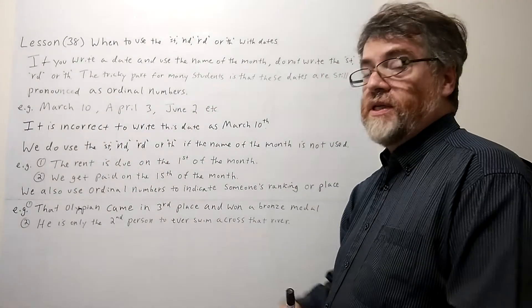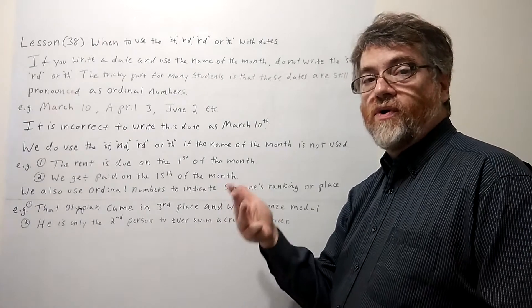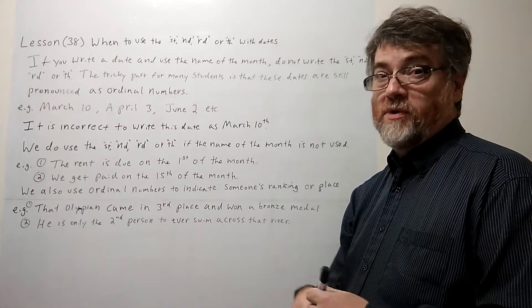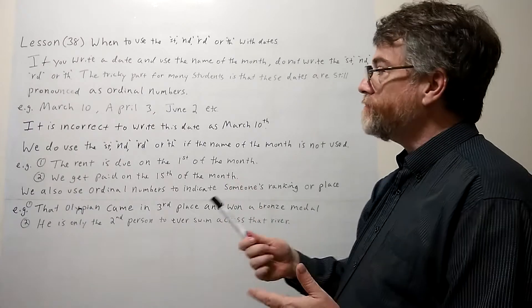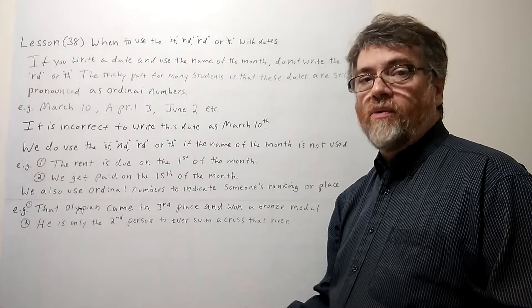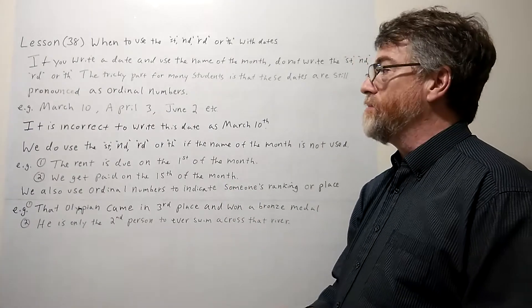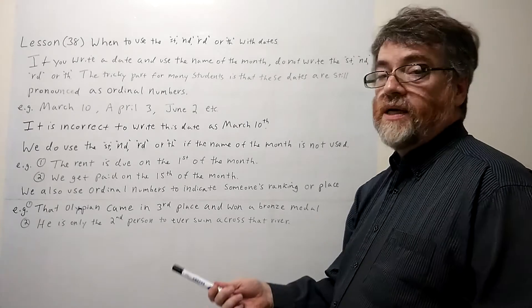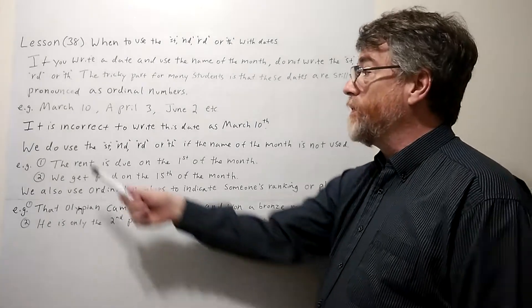Remember, ordinal numbers, that's first, second, third, fourth, fifth. The other one is cardinal numbers, which is one, two, three. All right, so dates are always pronounced as ordinal numbers. Okay, so let's take an example.